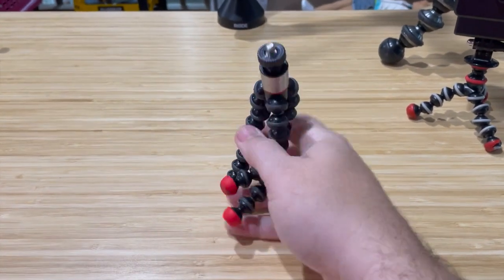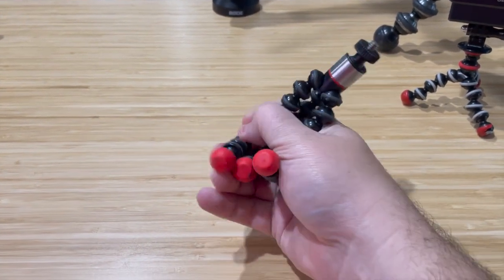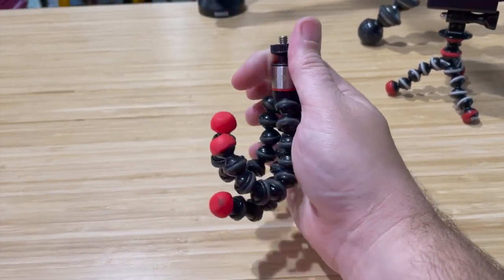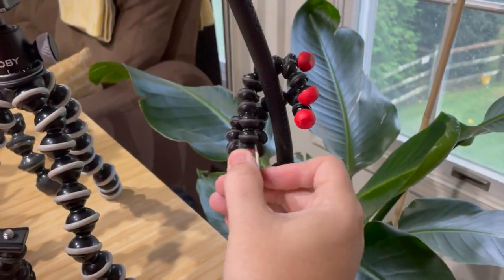You can wrap this around things because the legs actually bend in any direction that you want. So you can wrap this around a little bar. If I did this with two hands, I could wrap it around here.